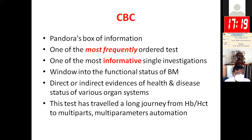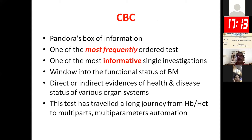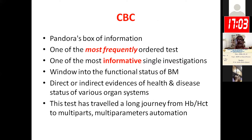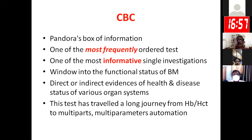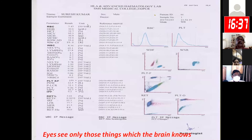CBC is one of the most frequently ordered tests by a clinician and one of the most informative single investigations. It provides a window into the functional status of bone marrow and gives direct or indirect evidence of health and disease of various organ systems. It has crossed a long journey — from manual Neubauer chamber counting and hemoglobin estimation to new generation cell counters which now fetch around 55 numerical parameters, with around 33 parameters related to RBC alone.